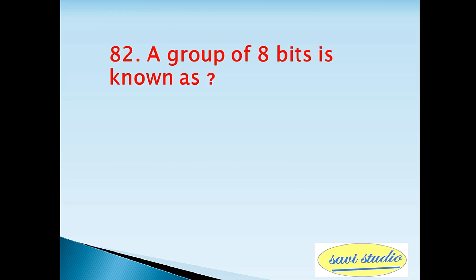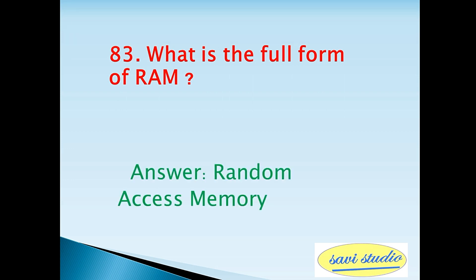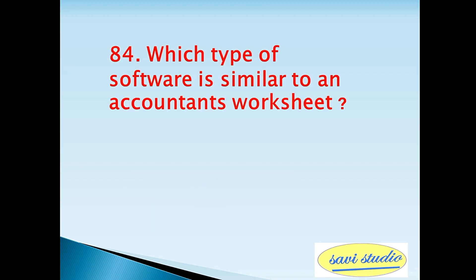Eighty-second question: a group of eight bits is known as — answer: a byte. Eighty-third question: what is the full form of RAM? Answer: Random Access Memory. Eighty-fourth question: which type of software is similar to an accountant's worksheet? Answer: spreadsheet.